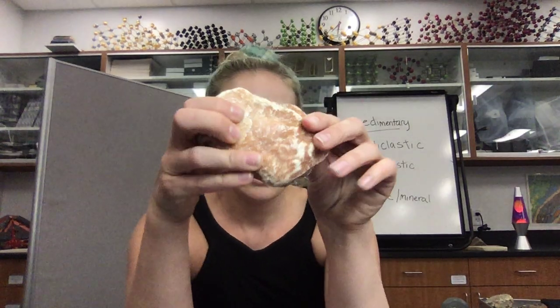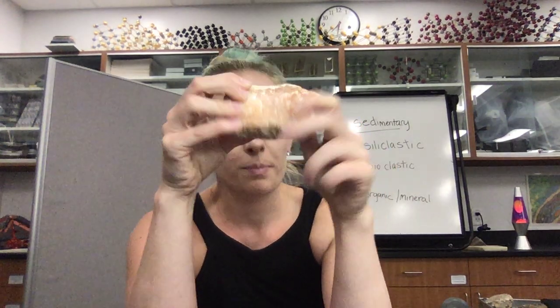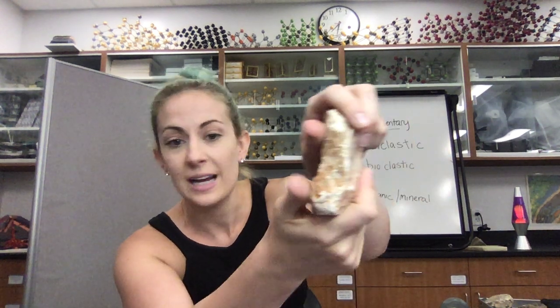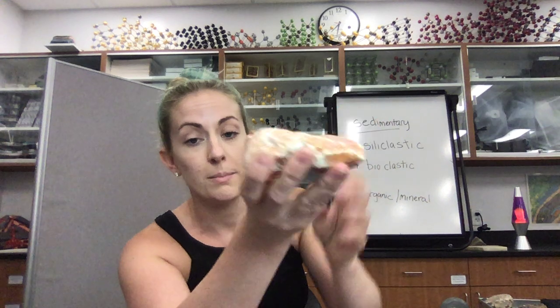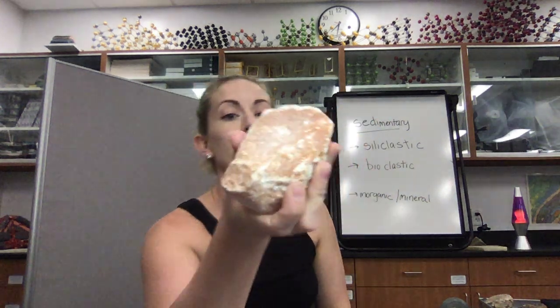Here we have the sedimentary rock version of gypsum. Gypsum is very, very soft — it can be scratched by your fingernail. This one here I'm able to scratch with my fingernail. It has the same mineral properties as what makes it up, but this one counts as a sedimentary rock because it is a precipitated-out mineral.